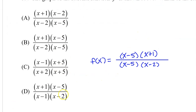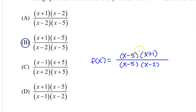There is only one option that matches what we found. Can you spot it? The answer is B. The way they have it is a little bit backwards from us, but it has x plus 1 times x minus 5 in the numerator, and x minus 2 times x minus 5 in the denominator.